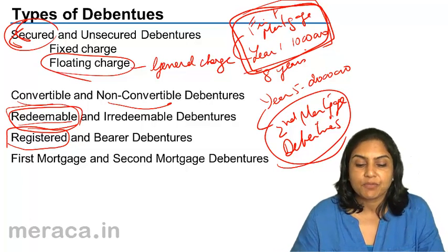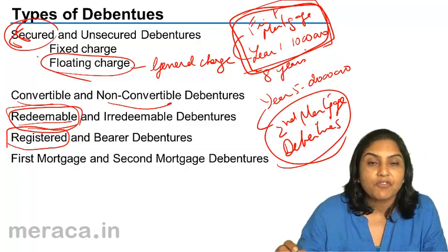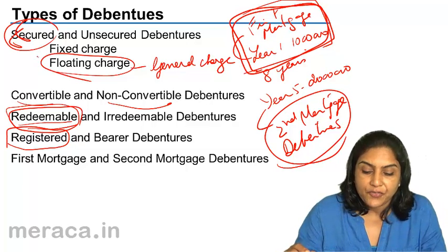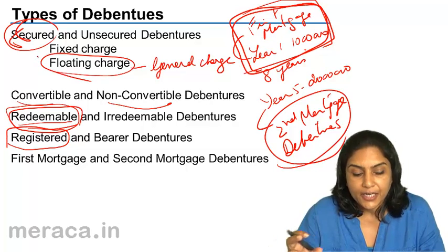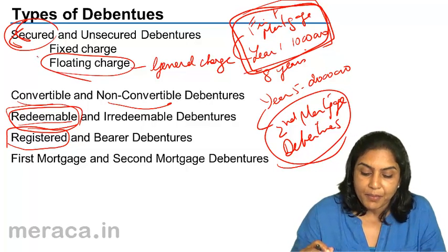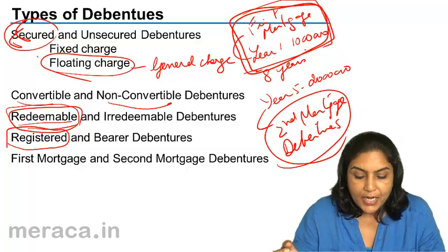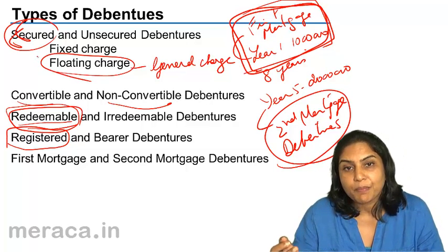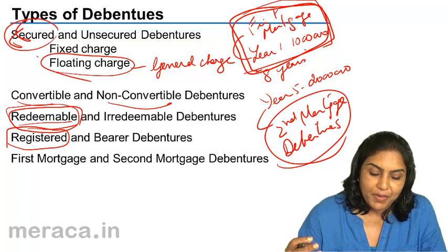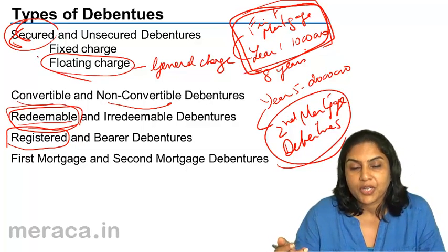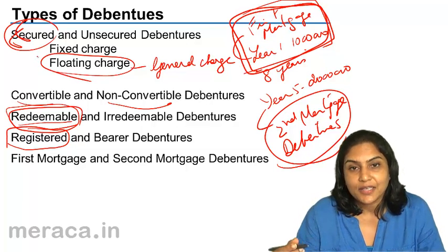In summary, debentures may be secured or unsecured on the basis of security; convertible or non-convertible depending on convertibility to shares; redeemable or irredeemable depending on terms of repayment; registered or bearer depending on negotiability or transferability; or first mortgage or second mortgage depending on the charge against the debentures.